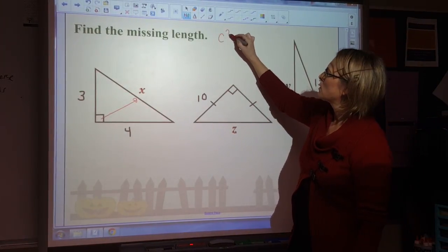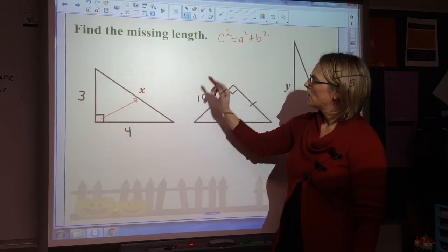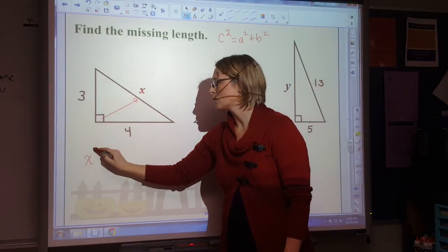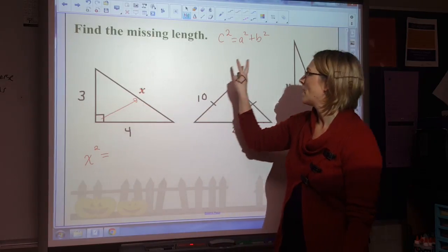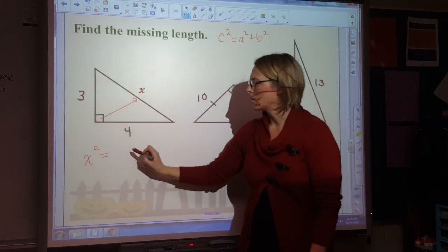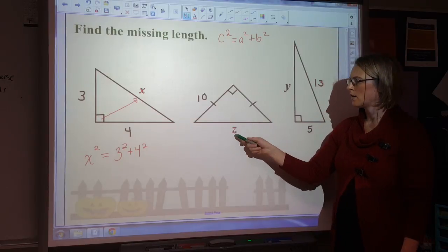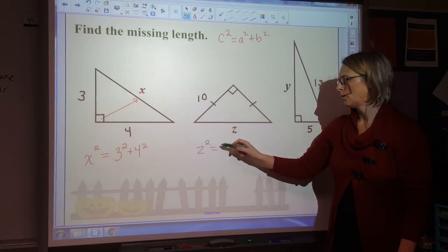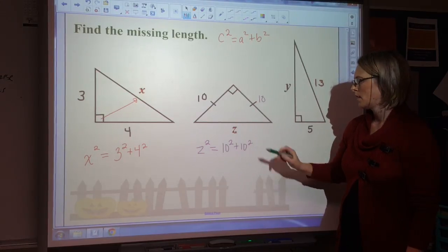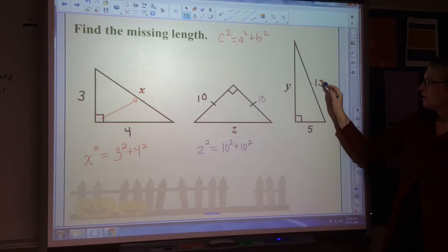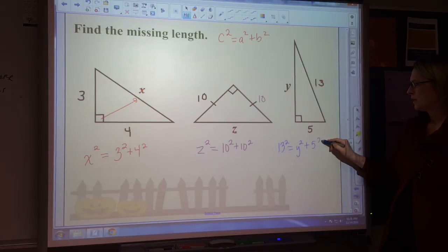Using C squared equals A squared plus B squared, I'm going to plug in the values I have for each one and solve. X is my hypotenuse, so I write X squared equals the legs: 3 squared plus 4 squared. For the second equation, Z squared equals 10 squared plus 10 squared, because the congruent markings tell me that side is 10. For the last triangle, 13 is my hypotenuse, so 13 squared equals Y squared plus 5 squared.